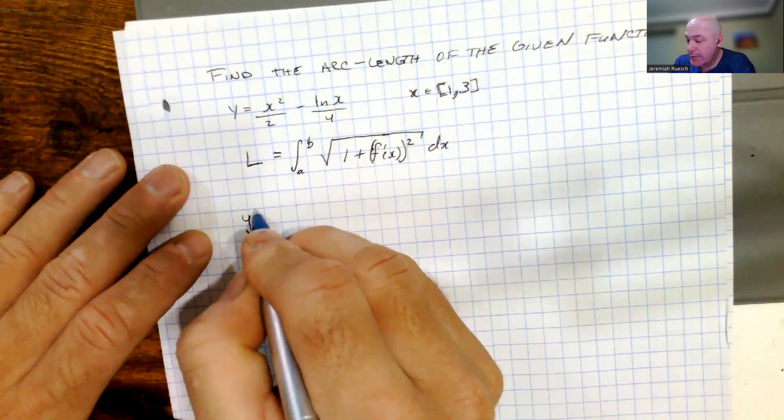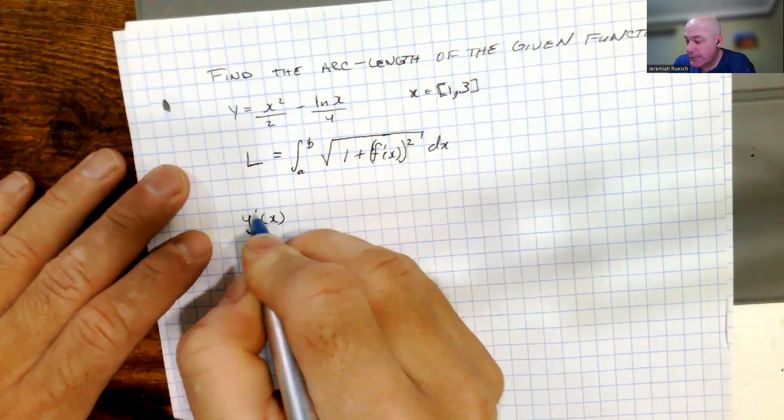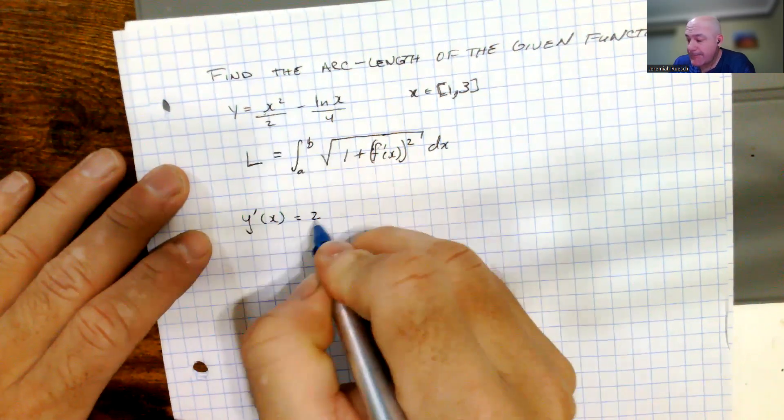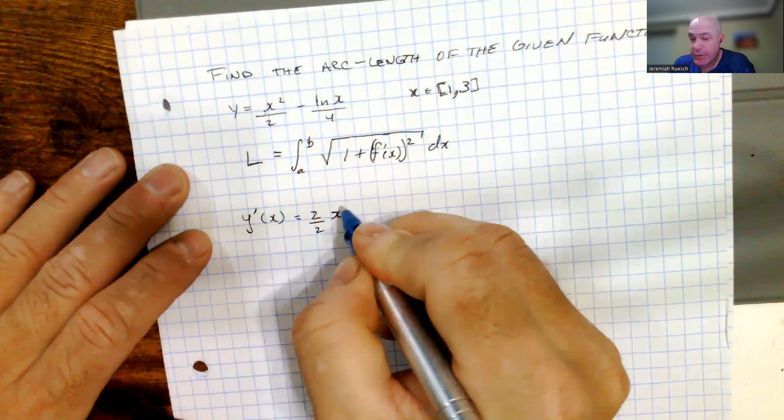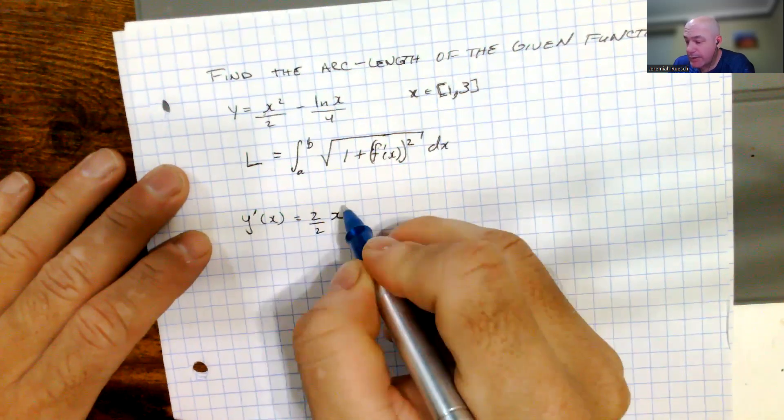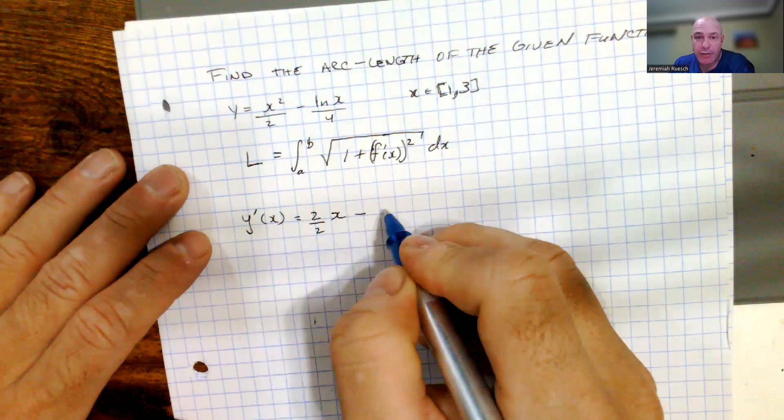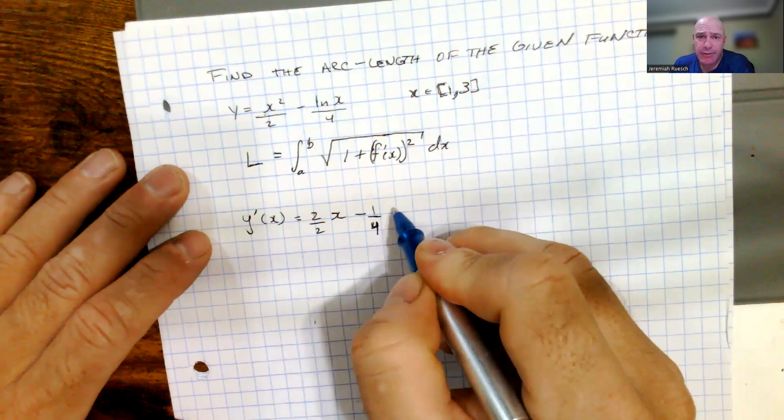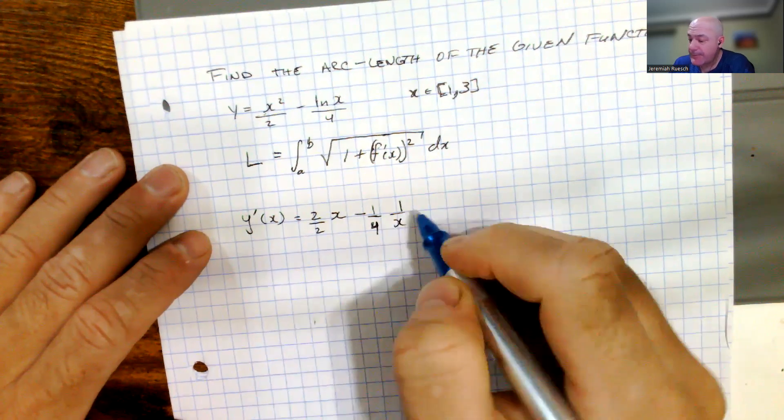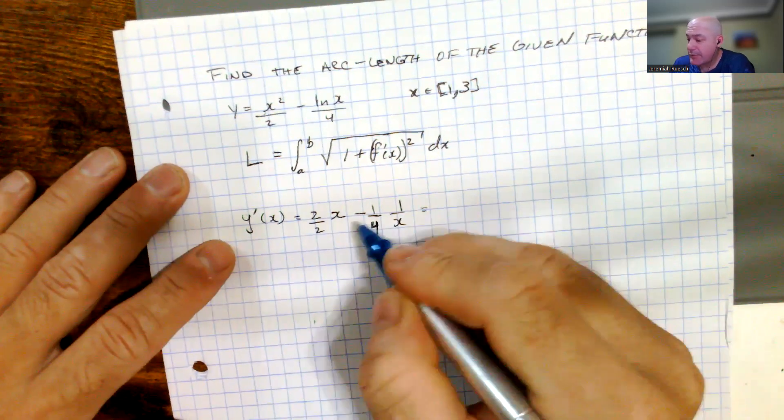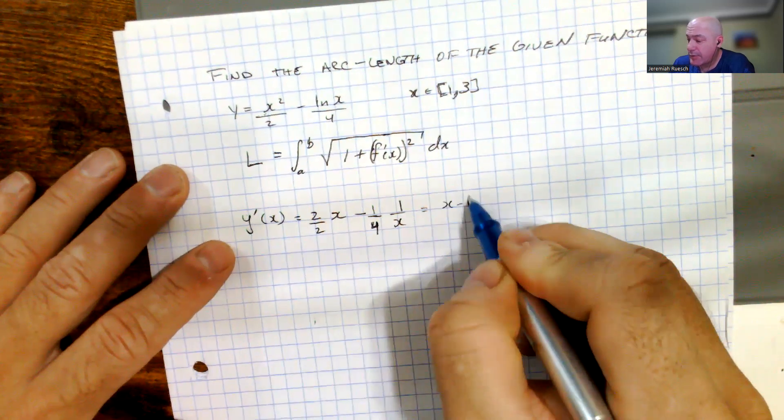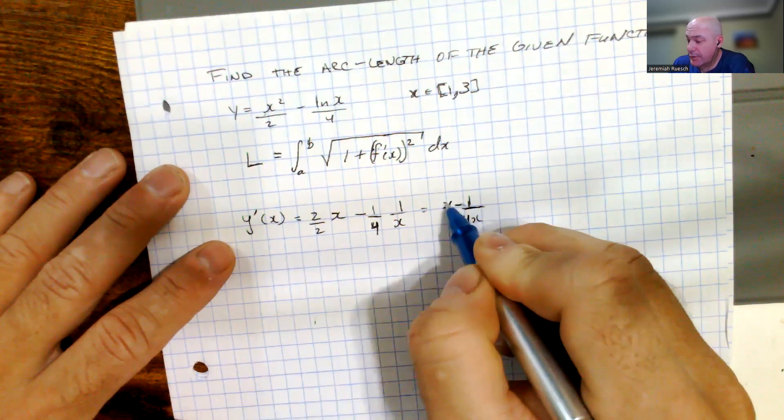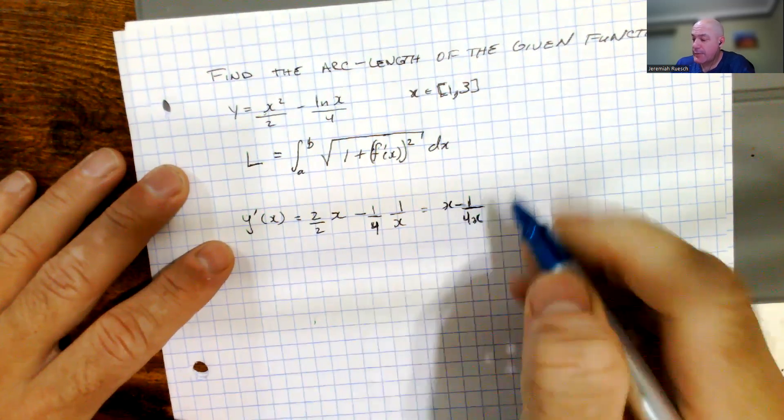So we have y prime of x is equal to, using the power rule, bringing down the 2, and the 2's are going to divide out, and I reduce the exponent on the x squared to 1, or by 1 I should say. And then the derivative, the constant term 1 fourth, this comes out in front, and then the derivative of the natural log is 1 over x. Simplifying all this, we get x minus 1 over 4x is our result there.